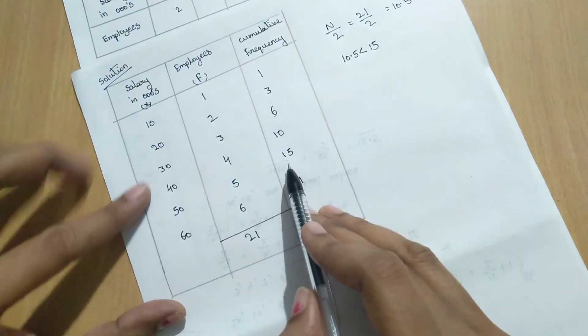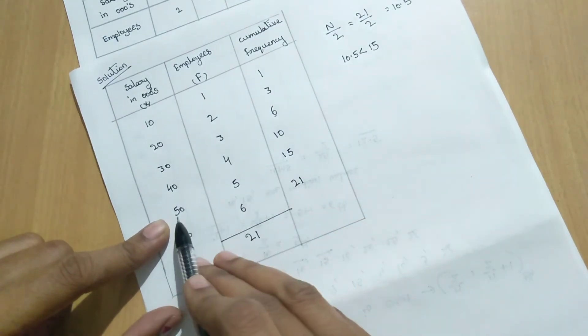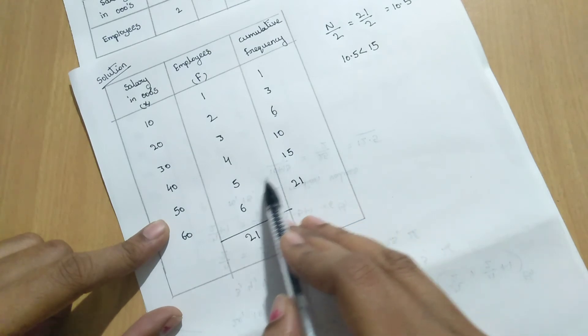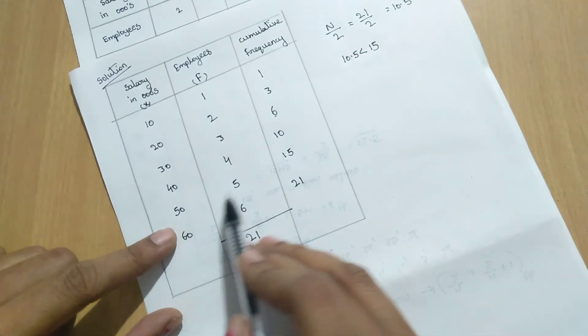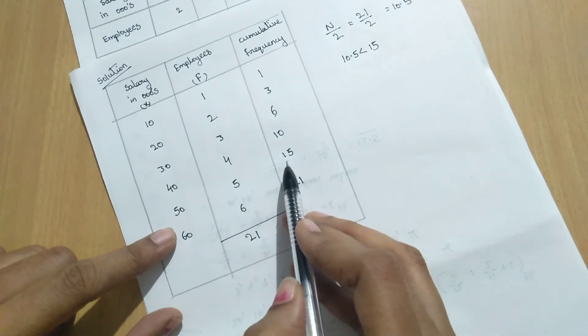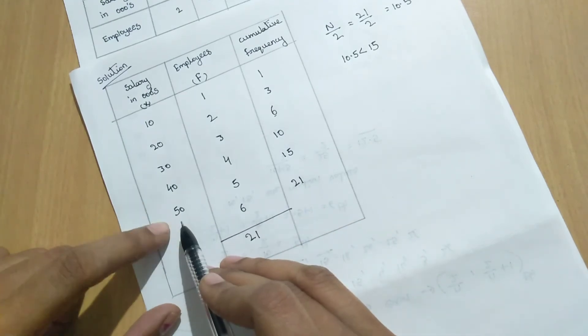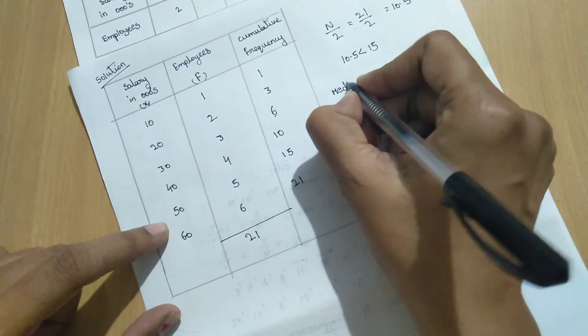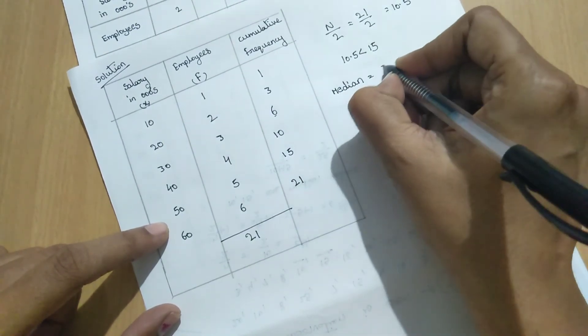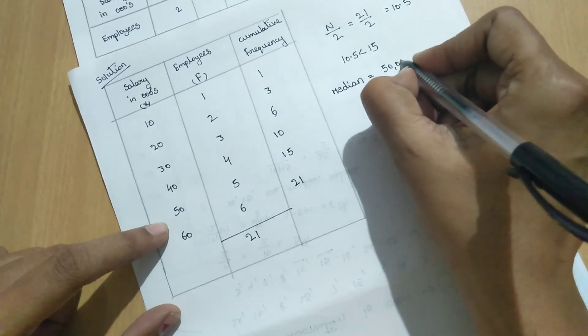So we have to see 15. So we have to see in x value. So the 15 correspondence value is 50. What is the corresponding value to 15 in cumulative frequency value? 50. That means median equal to 50,000 rupees.